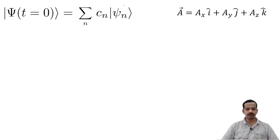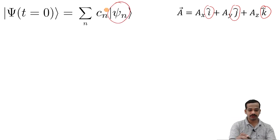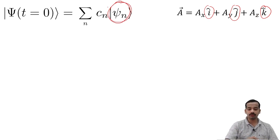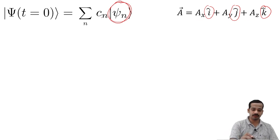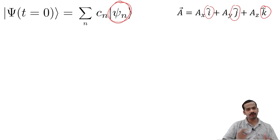You can find lots of similarity here. Here i-cap, j-cap, k-cap are unit vectors — they have unit length, meaning they are normalized. Similarly, psi-n are normalized. Also, i-cap, j-cap, k-cap are orthogonal to each other, and similarly psi-n are orthogonal to each other. A-x, A-y, A-z are very similar to the c-n coefficients (c1, c2, c3, and so on), and vector A is similar to psi at t equal to 0.